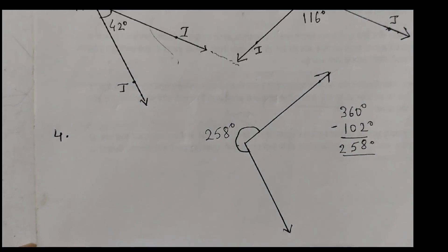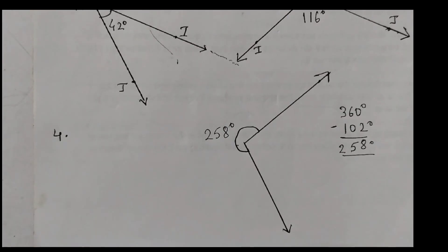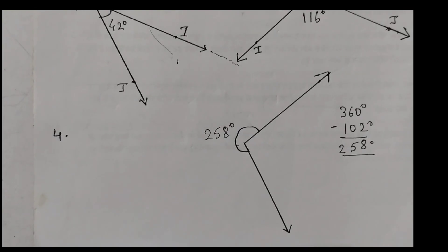The measure of this reflex angle is 258 degrees. That is how we find the measure of a reflex angle — we measure the smaller angle and subtract from 360 degrees. If you'd like to practice measuring and drawing more reflex angles, there are separate videos in the playlist showing how to draw and measure reflex angles.